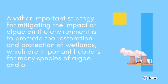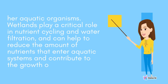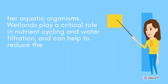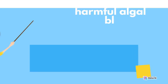Another important strategy is to promote the restoration and protection of wetlands, which are important habitats for many species of algae and other aquatic organisms. Wetlands play a critical role in nutrient cycling and water filtration, and can help to reduce the amount of nutrients that enter aquatic systems and contribute to the growth of harmful algal blooms.